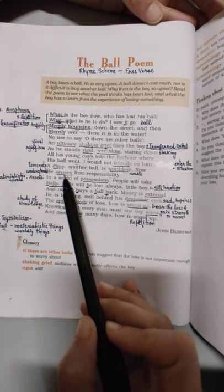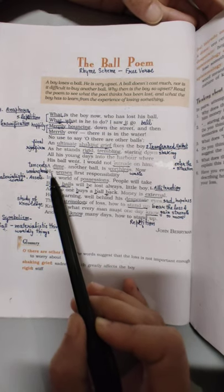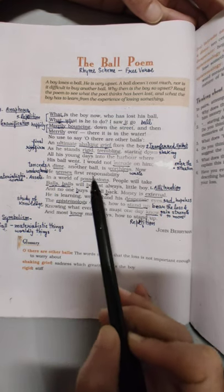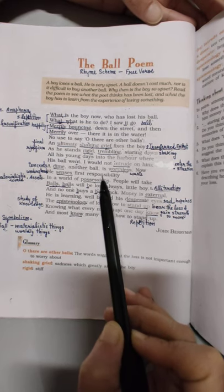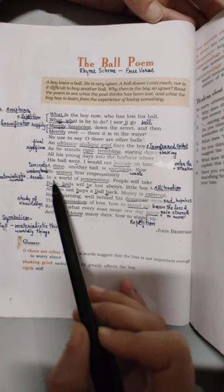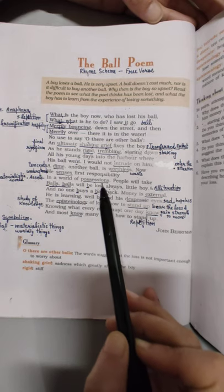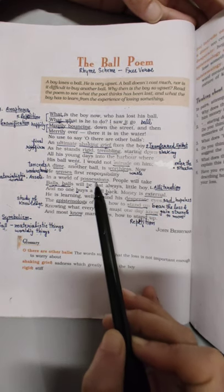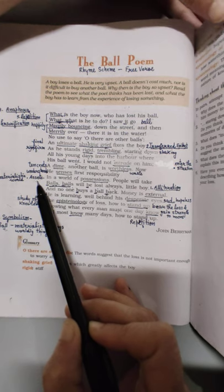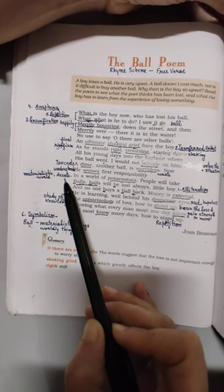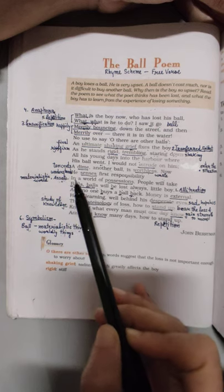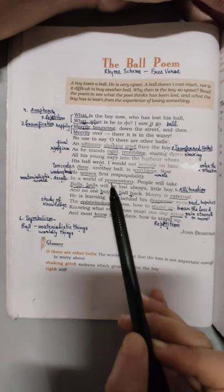Now he senses - senses means understands. Ki is samay woh samajh raha hai first responsibility. Ki life mein uski jo first responsibility hai, wo jimmedari ko samajh raha hai. Aur mein yeh chahta hun ki woh usse samjhe. In a world of possessions - possessions means assets, jo bhi materialistic chizein hum ikatha karte hai, jitni bhi worldly things hum ikatha karte hai. So poet is world ko naam deta hai world of possessions ka.